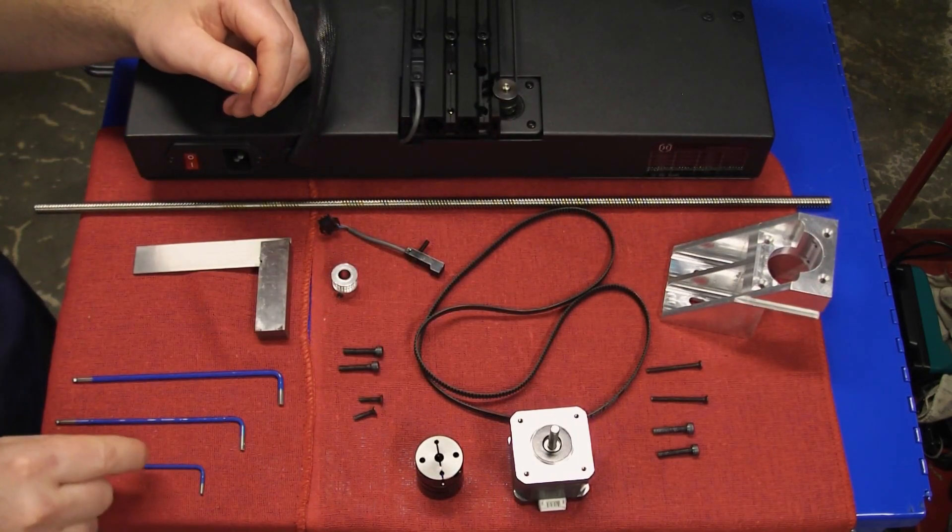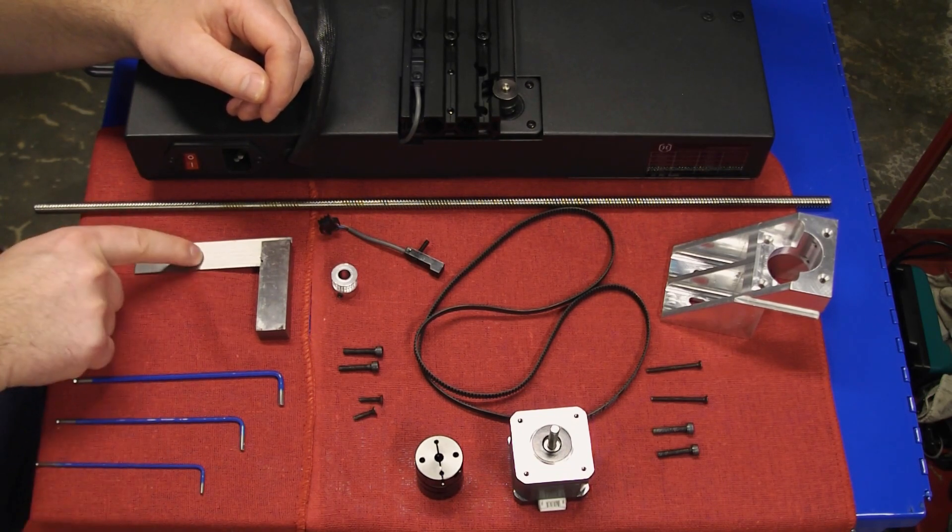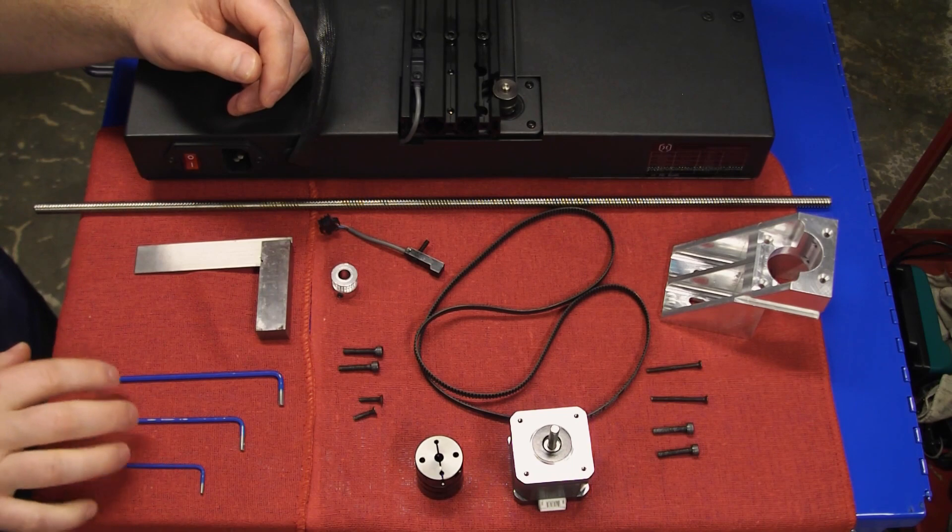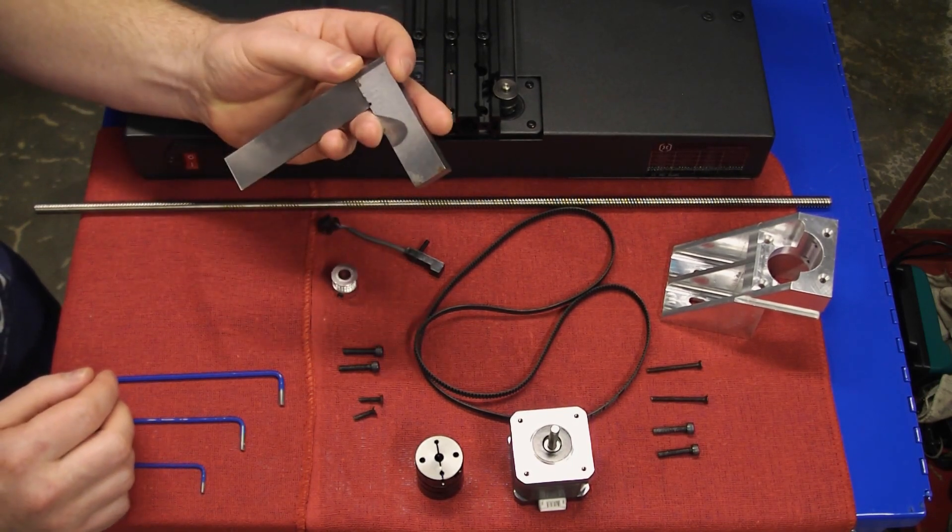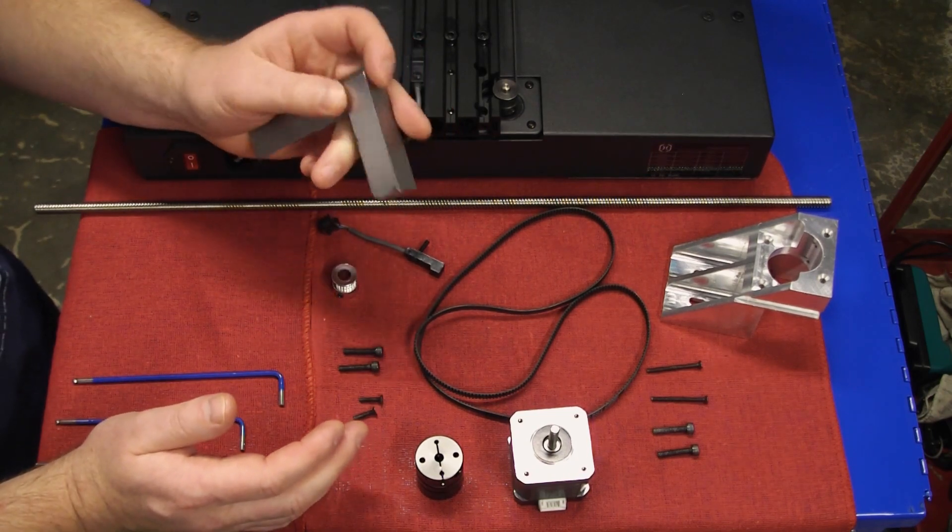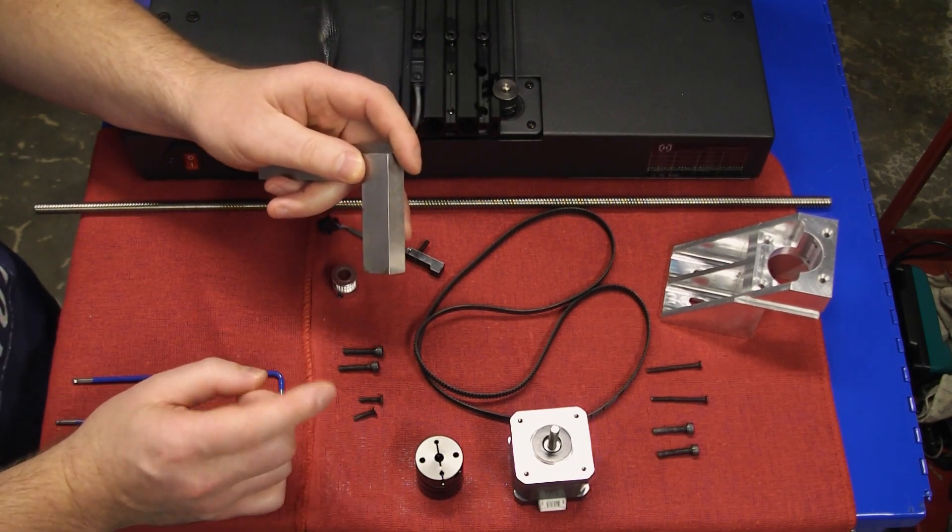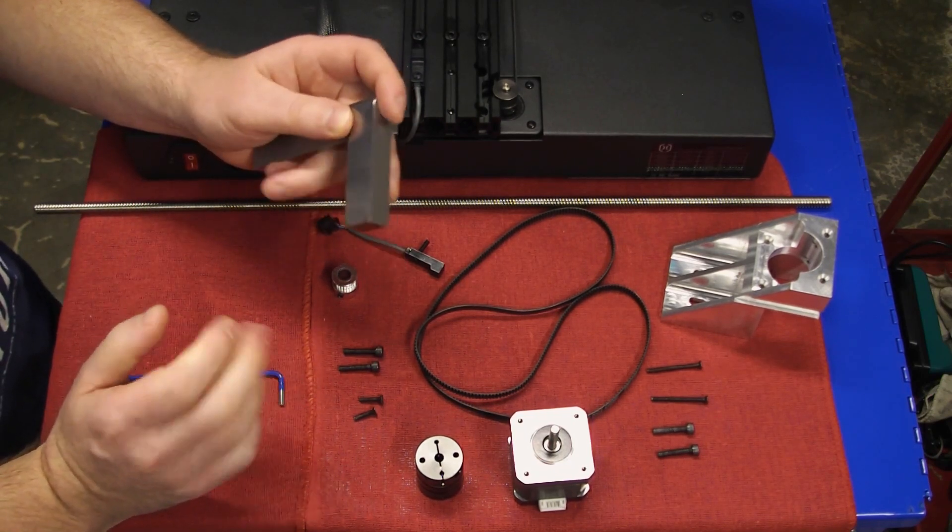Tools you will need to complete this are a 2, 2.5, and 3 millimeter Allen wrench, and a square. Your machine should have come with Allen wrenches, but you will need to source the square yourself. I'm using a small machinist square. Really, any hardware store carpenter square will do just fine. For extra points, you could 3D print a square before disassembling your machine. Let's get started.